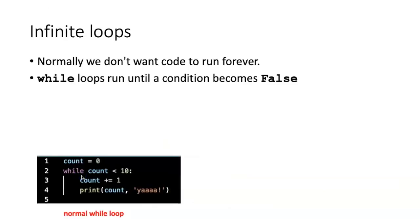But what if we don't want the code to only execute 10 times? What if we want it to just keep reporting until we tell it to stop? Normally we don't want code to run forever, and so there is a Python code structure called a while loop. Unlike a for loop where you specify the number of times you want the loop to execute, the while loop keeps running until a particular condition becomes false.